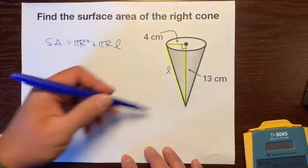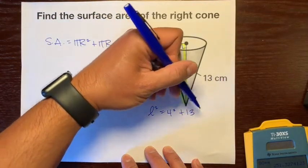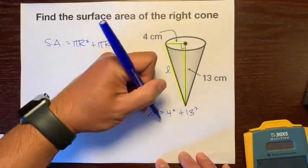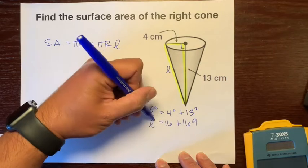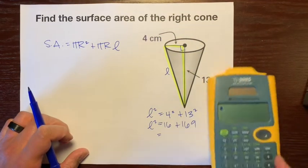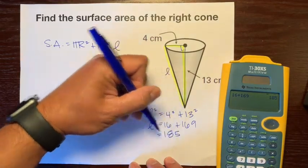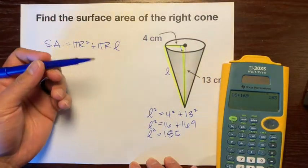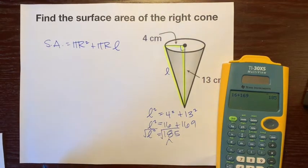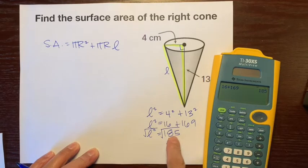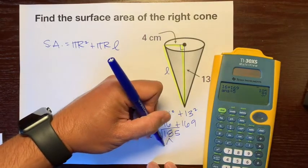L squared equals 4 squared plus 13 squared. 4 squared is 16 plus 13 squared is 169 equals L squared. Let's add these: 16 plus 169 is 185 equals L squared. Let's see if we can simplify this. We're going to square root both sides. Let's see if we can simplify the square root of 185. Using my calculator, 5 goes into 185. 185 divided by 5 is 37, so 5 times 37.